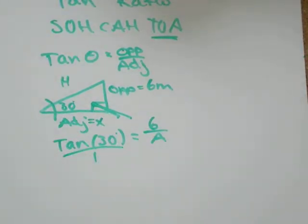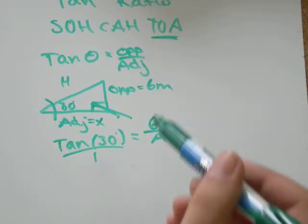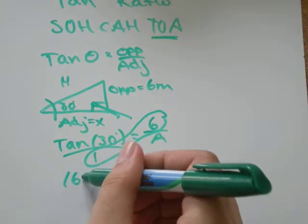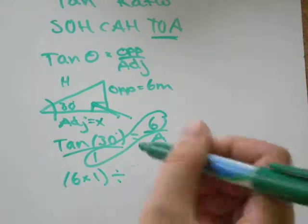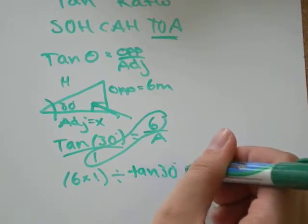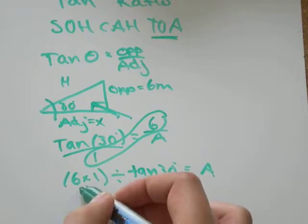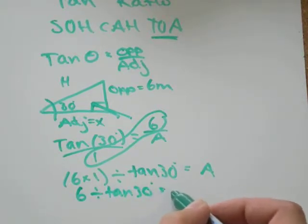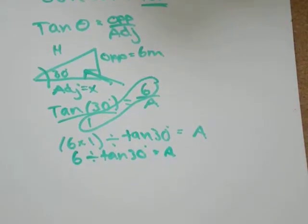Tan of 30 degrees is the same as tan of 30 degrees divided by 1. So, all I need to do is multiply those two numbers. 6 times 1 and divide by what's left over, tan of 30. And that will equal my unknown. 6 times 1 is 6 divided by tan of 30. Tan of 30 is just some horrible decimal.